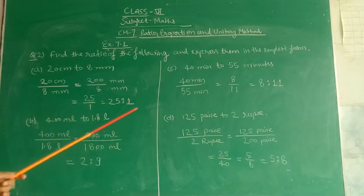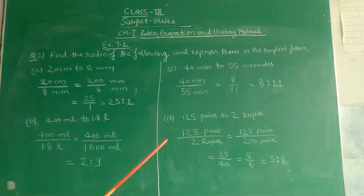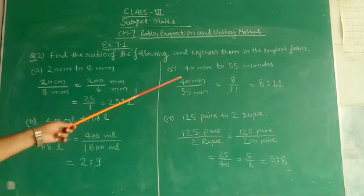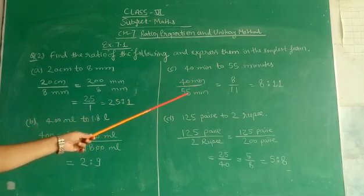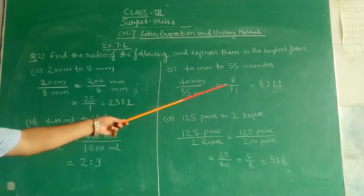Part C is 40 minutes to 55 minutes. Now we find the ratio 40 upon 55 minutes, divide by 5. 5 into 40 and 5 into 55, that is 8 ratio 11.